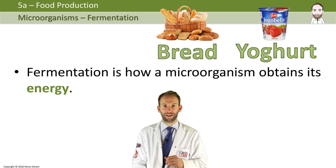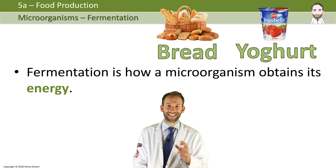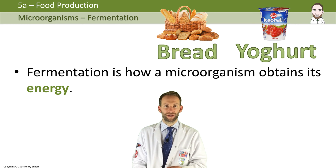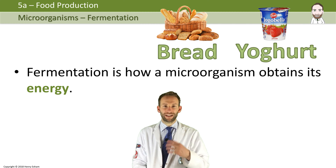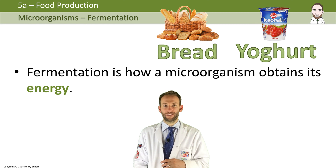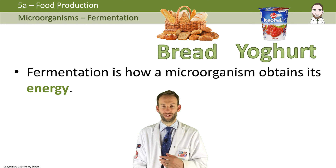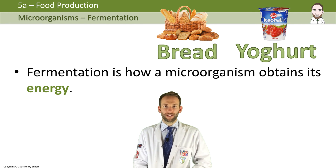Fermentation is how a microorganism obtains its energy with no oxygen. It does this by converting certain substances — usually sugars — and making waste products. The waste products are what we want from the microorganisms; that's the thing we want when they carry out fermentation.